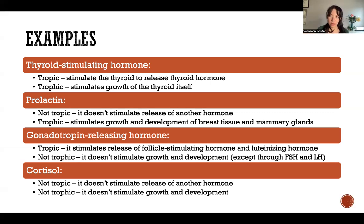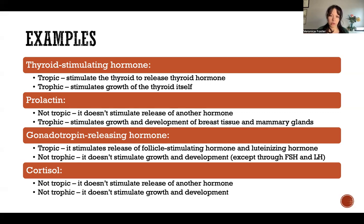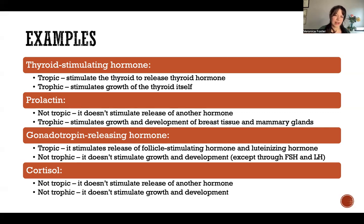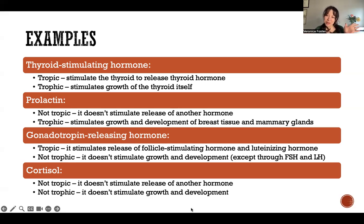Cortisol is an example of a hormone that is neither tropic nor trophic. It has entirely different functions in the body. It doesn't cause the release of any other hormone, so it's not tropic, and it also doesn't stimulate growth and development, so it's not trophic. There are lots of hormones in that category — hormones that are just out there doing their job and are not directly interacting with other hormones or causing growth and development. Thank you so much for watching this video, and I hope you learned something.